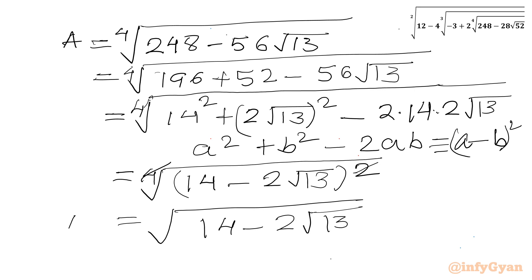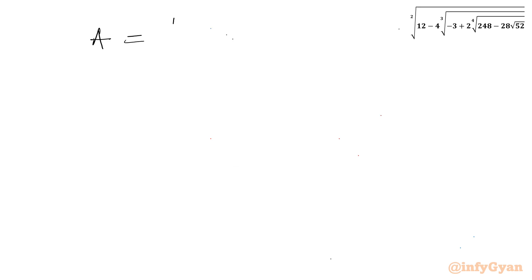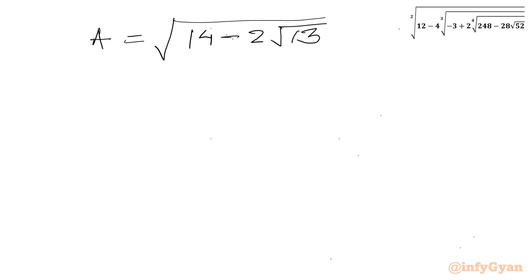So this is our A so far. A equals square root of (14 minus 2 square root 13). Again I will split 14 as 13 plus 1, then we have minus 2√13.